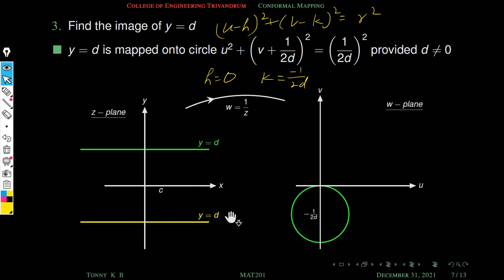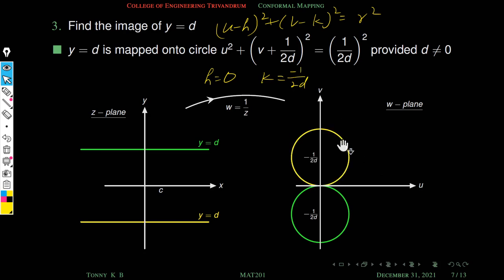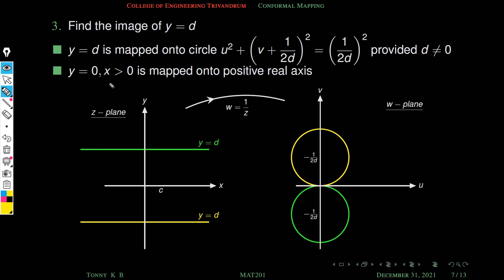So for d > 0 (positive horizontal lines), images are circles centered on the negative v-axis; for d < 0 (negative horizontal lines), circles are centered on the positive v-axis. These are the images of y = d under w = 1/z. Similarly, y = 0, x > 0 (positive real axis) maps to the positive real axis in the w-plane.